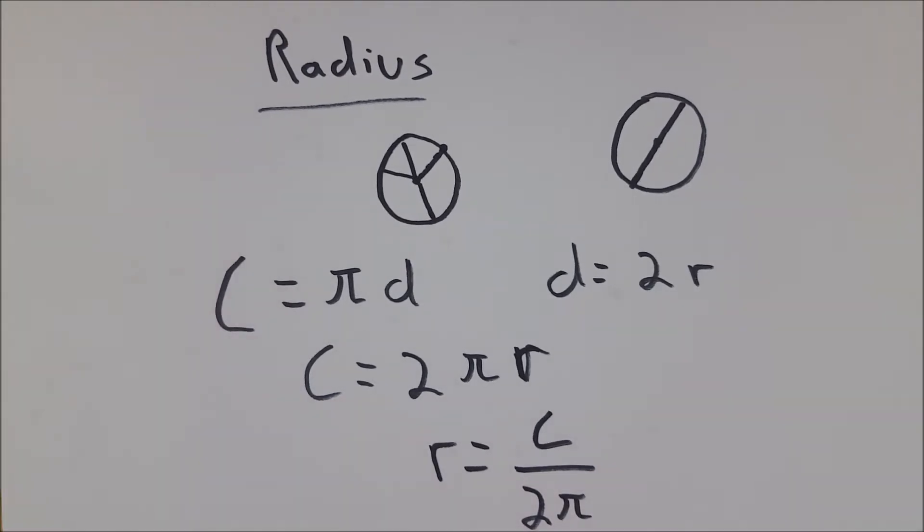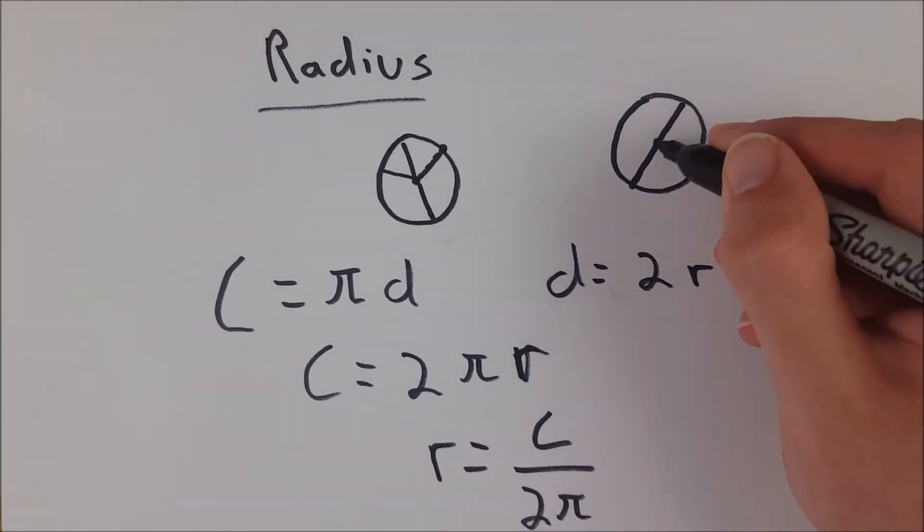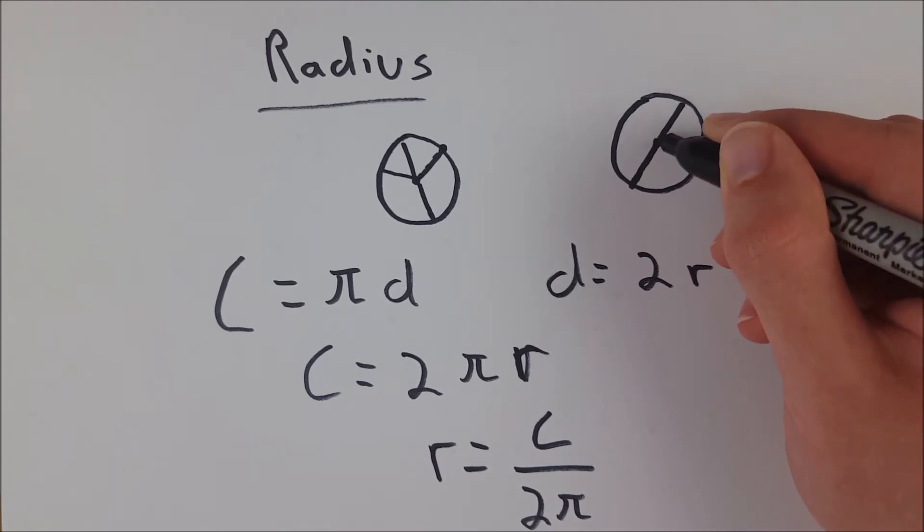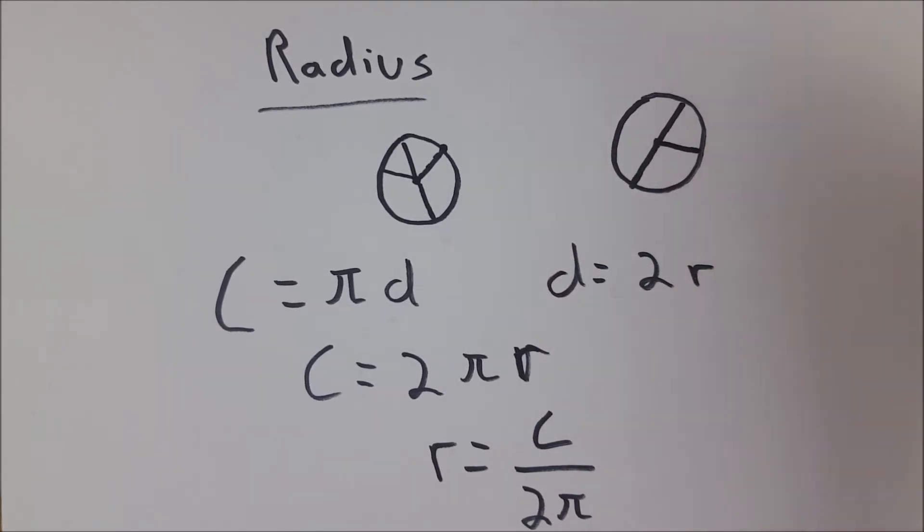And again, the radius is just the length of a segment that goes from the center of a circle to any point on the circle. If it's from there to there, there to there, there to there, same length, any way you go by definition of circle.